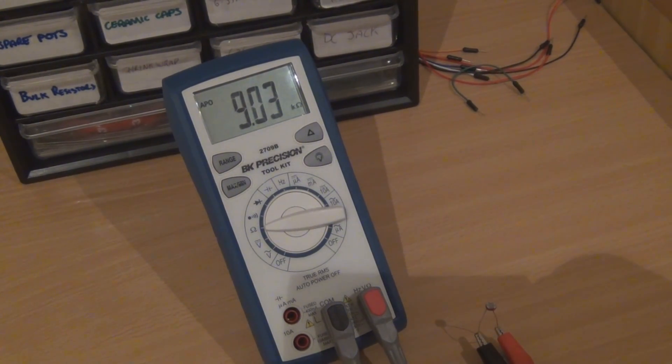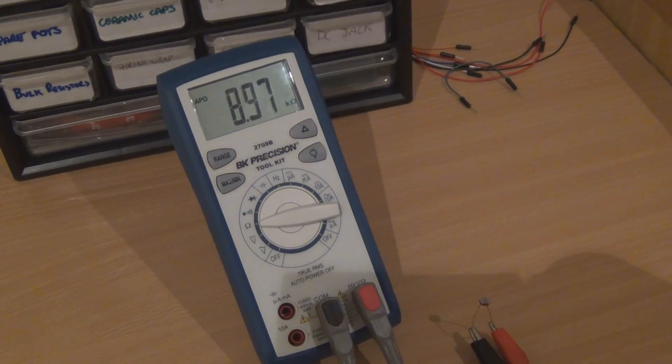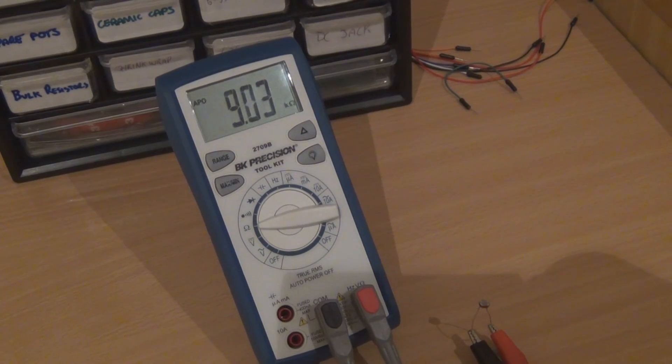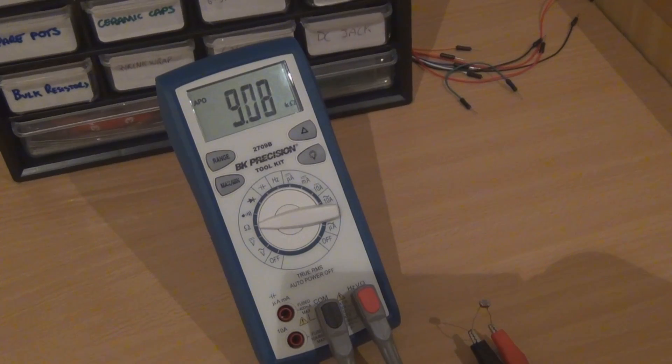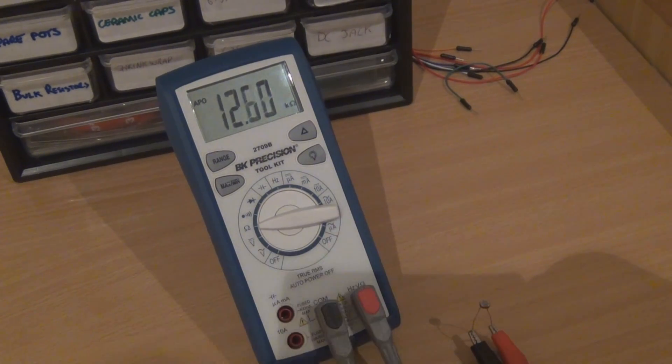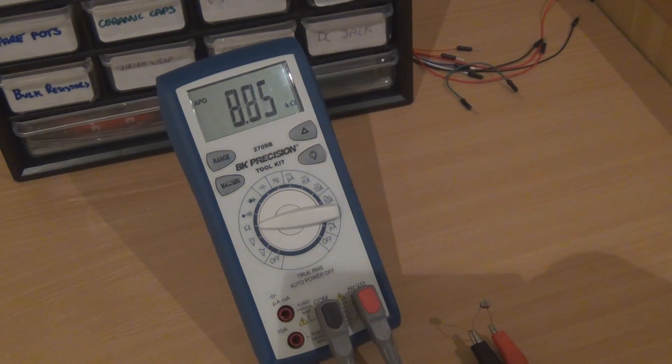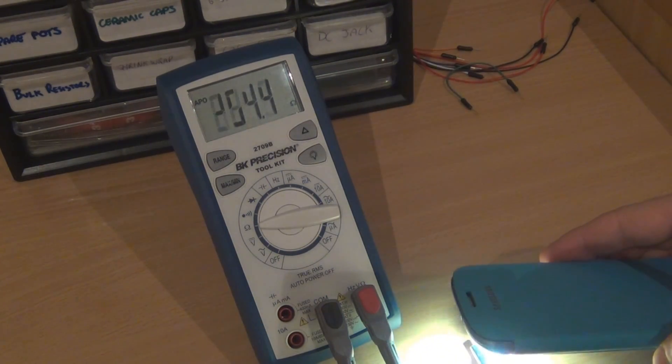So like I said in the intro, this is just basic info about LDRs. I'm not getting into anything complicated here. So at the moment, there's sort of a medium amount of light. Usually when you have these in tremolo pedals, you have a LED pointed directly at it, in fact, pretty much touching the LDR. So we can sort of simulate that with my mobile phone light. It's pretty bright. It's probably going to be brighter than even an LED, but you can see that's gone right down to under 100 ohms.